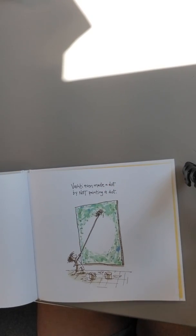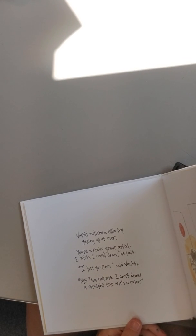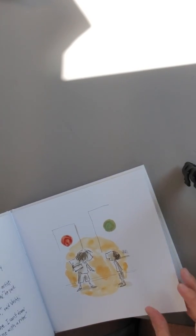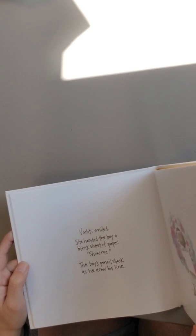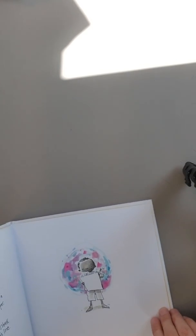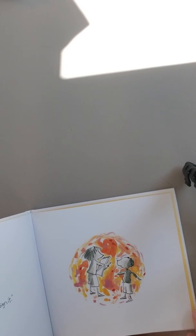Vashti even made a dot by not painting a dot. So if you look right here, she painted all the way around and it made a circle in the middle. At the school art show a few weeks later, Vashti's many dots made quite a splash. Vashti noticed a little boy gazing up at her. You're a really great artist. I wish I could draw, he said. I bet you can, said Vashti. Me? No, not me. I can't draw a straight line with a ruler. Vashti smiled. She handed the boy a blank sheet of paper. Show me. The boy's pencil shook as he drew his line. Vashti stared at the boy's squiggle, and then she said, please sign it. The end.